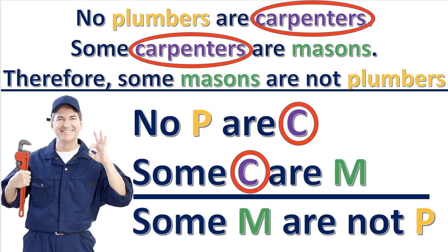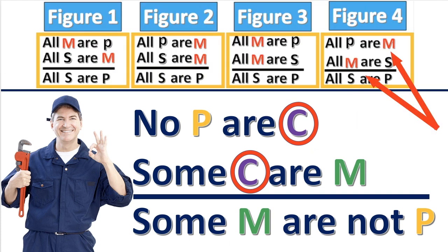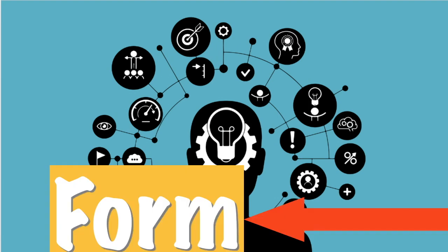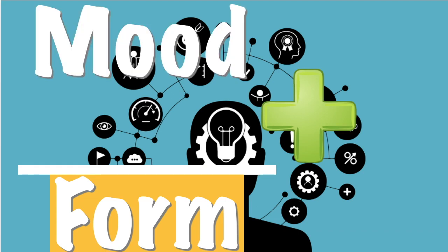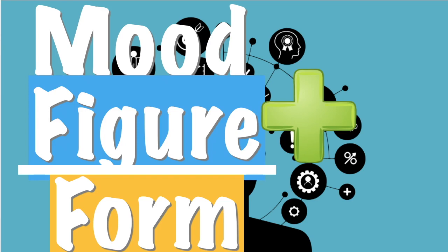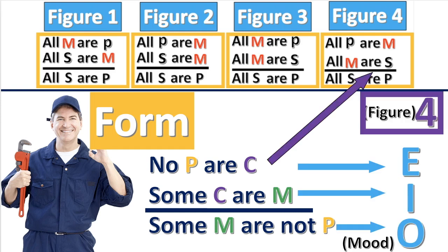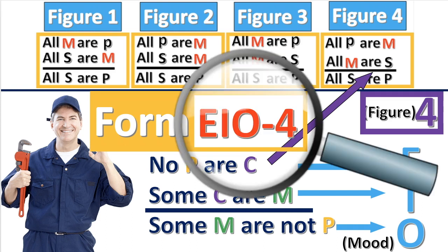In this syllogism, the middle term is C. The positions of C correspond to figure 4. Now you can determine what form the categorical syllogism has — the form is the combination of the mood and figure. This syllogism is the form E-I-O-4.